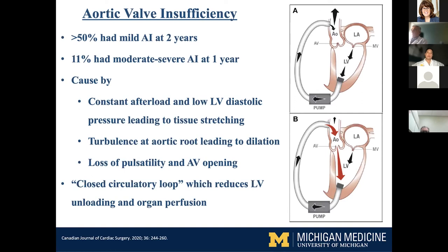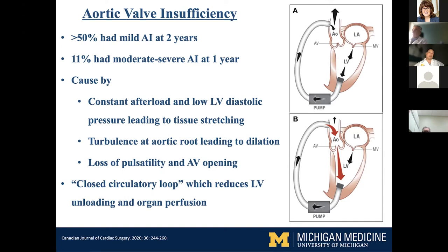Aortic valve regurgitation is a very common thing in patients who receive LVADs. More than 50% had mild AI if they didn't have it before within two years, and 11% had moderate-to-severe AI at one year. It's caused by constant afterload — if the aortic valve is not opening and the pump is constantly pumping blood into the aorta and pressing on that aortic valve, it can cause injury and thinning. The pump is also sucking blood inferiorly and pulling the aortic valve from below, creating turbulence at the root. You can create a closed circulatory loop where a portion of the VAD output doesn't go to the patient's body but just recirculates inside the pump, depending on the degree of aortic insufficiency.